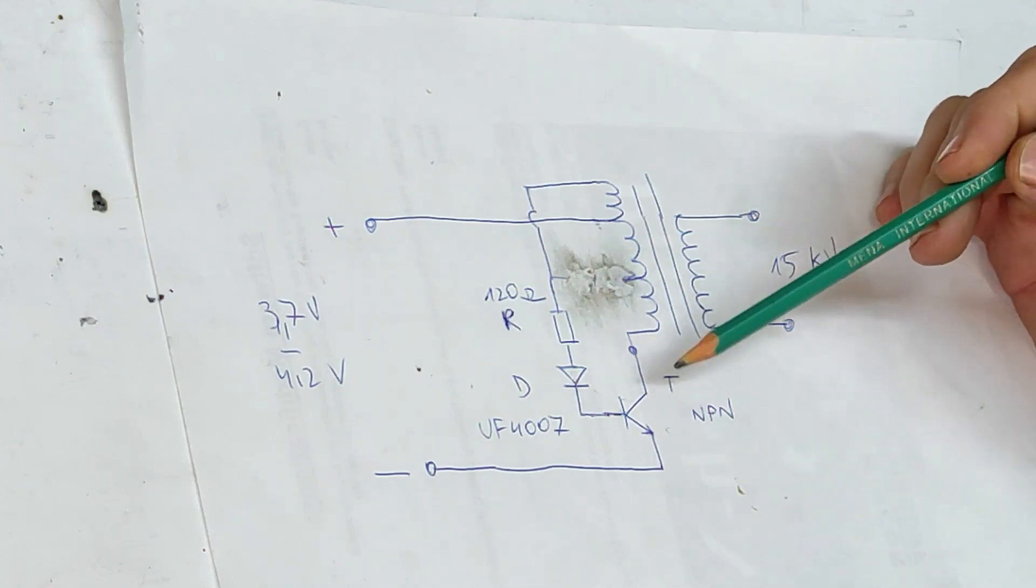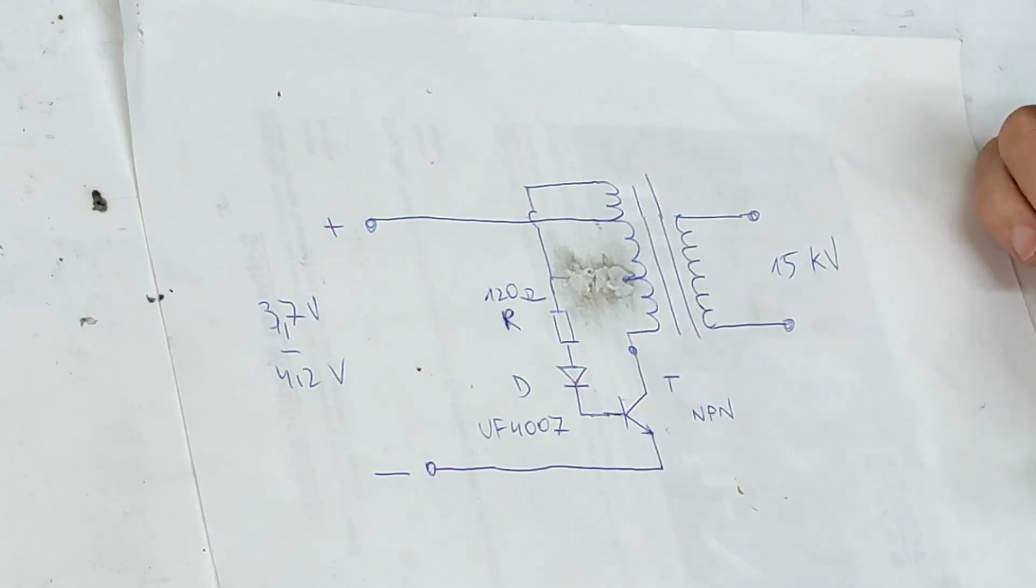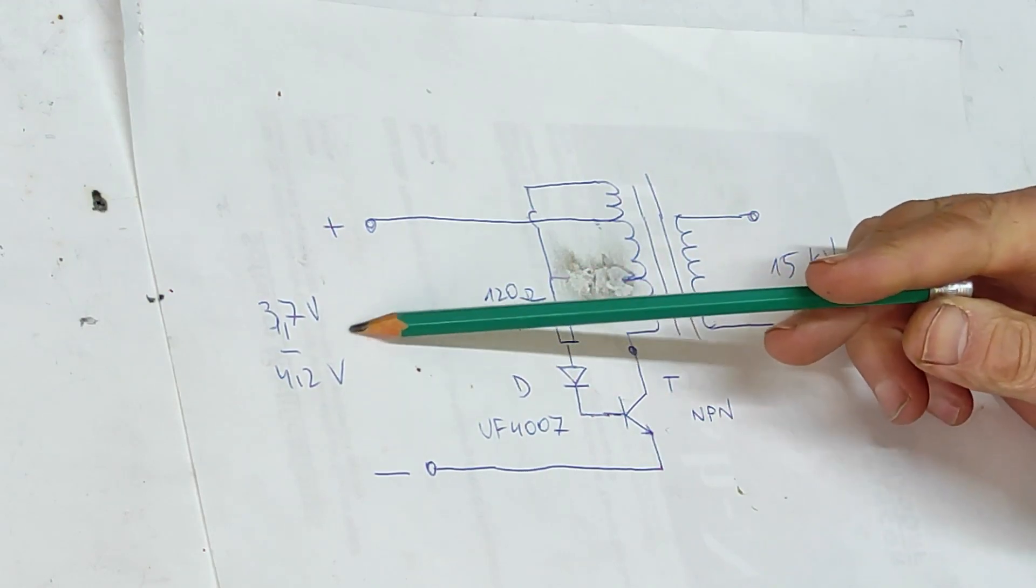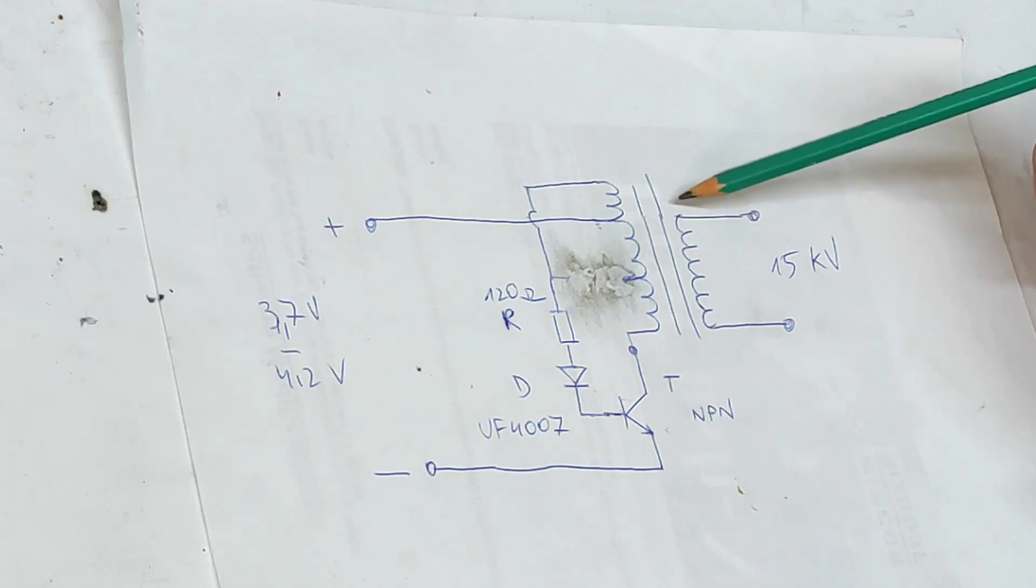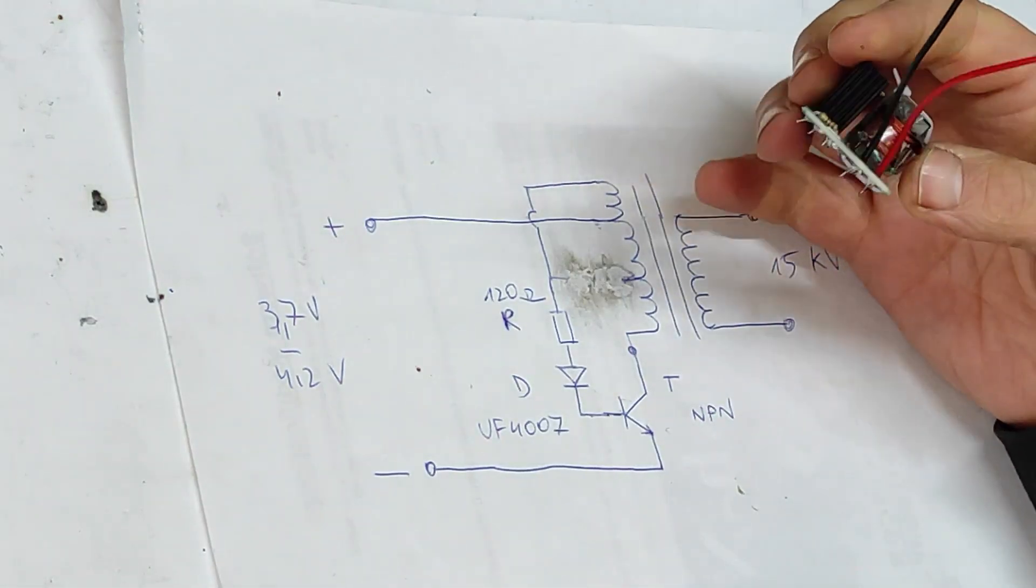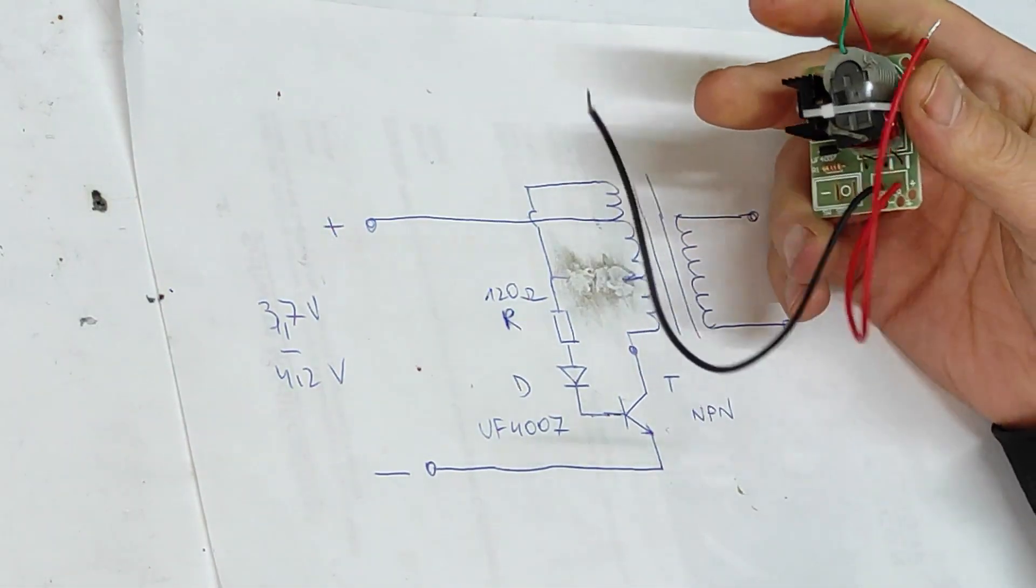When the transistor is open, we'll have positive voltage here and we'll go on and on - it will close and open. We'll use a laptop battery for power, and this high voltage transformer will create 15 kilovolts output and we'll make plasma.